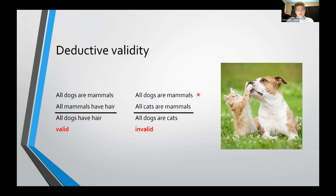Over here: all dogs are mammals, all cats are mammals, therefore all dogs are cats. This is invalid. In the real world, both premises are true but the conclusion is false. So you know it's possible for the premises to be true and the conclusion to be false.